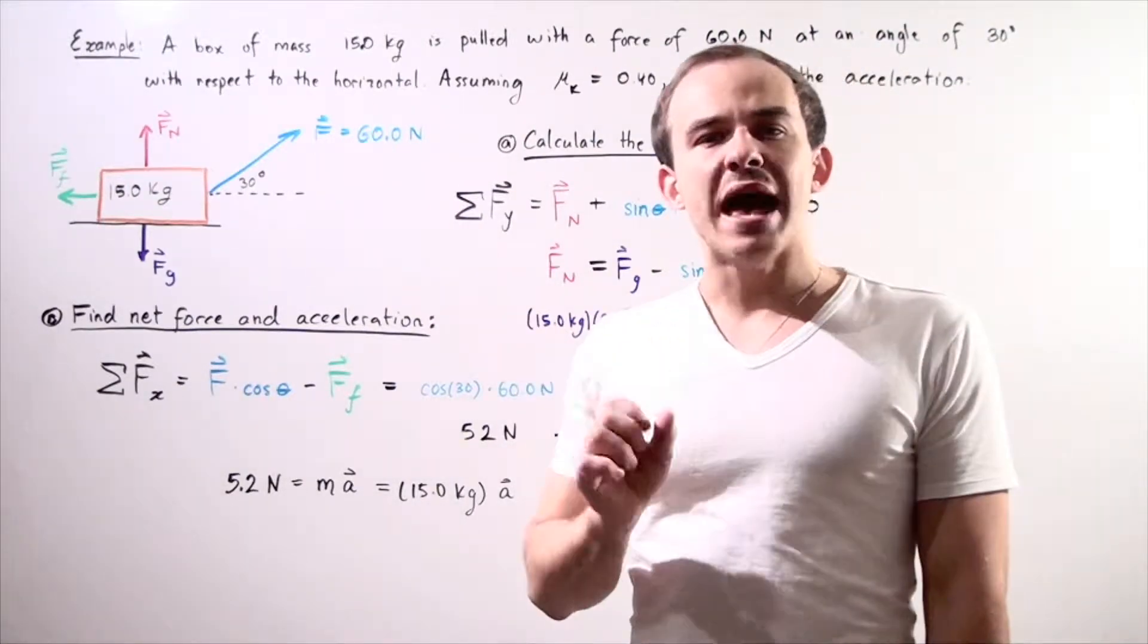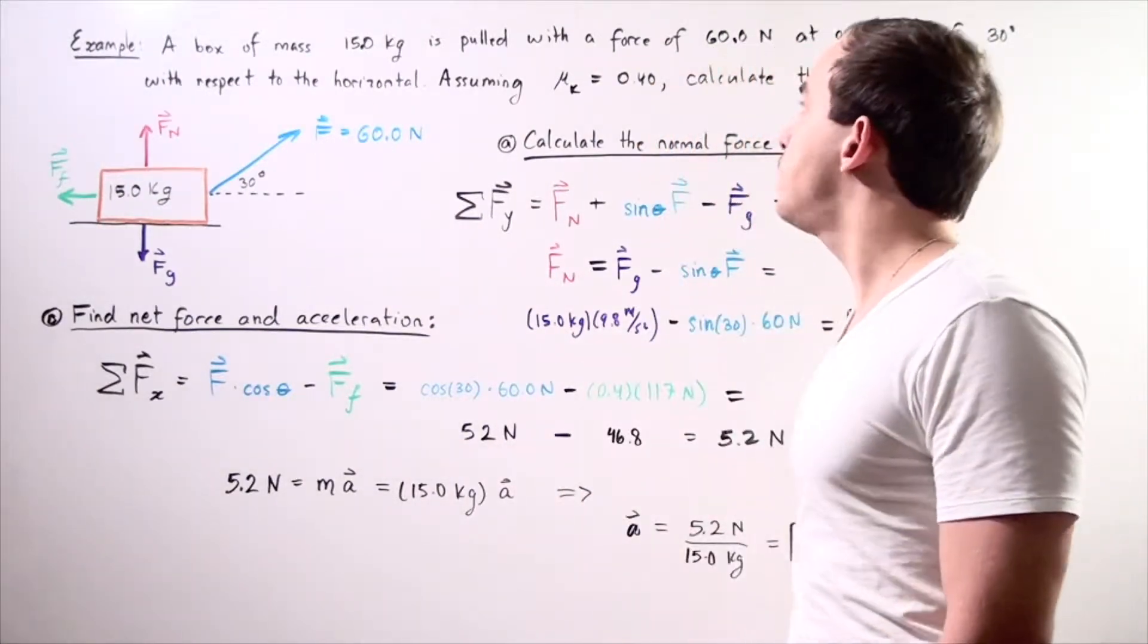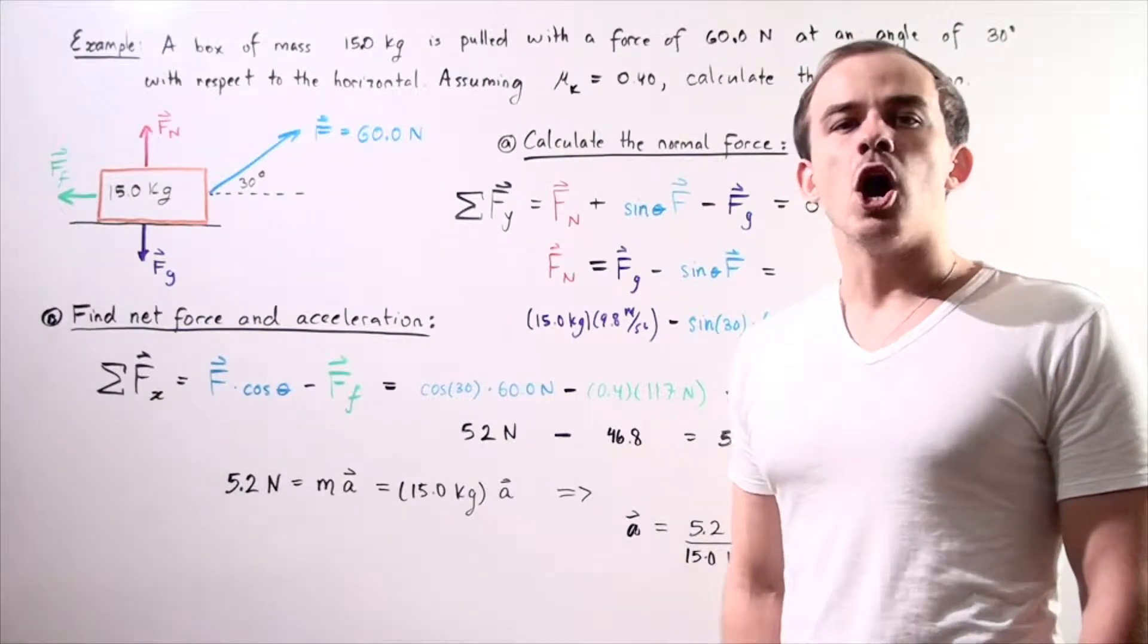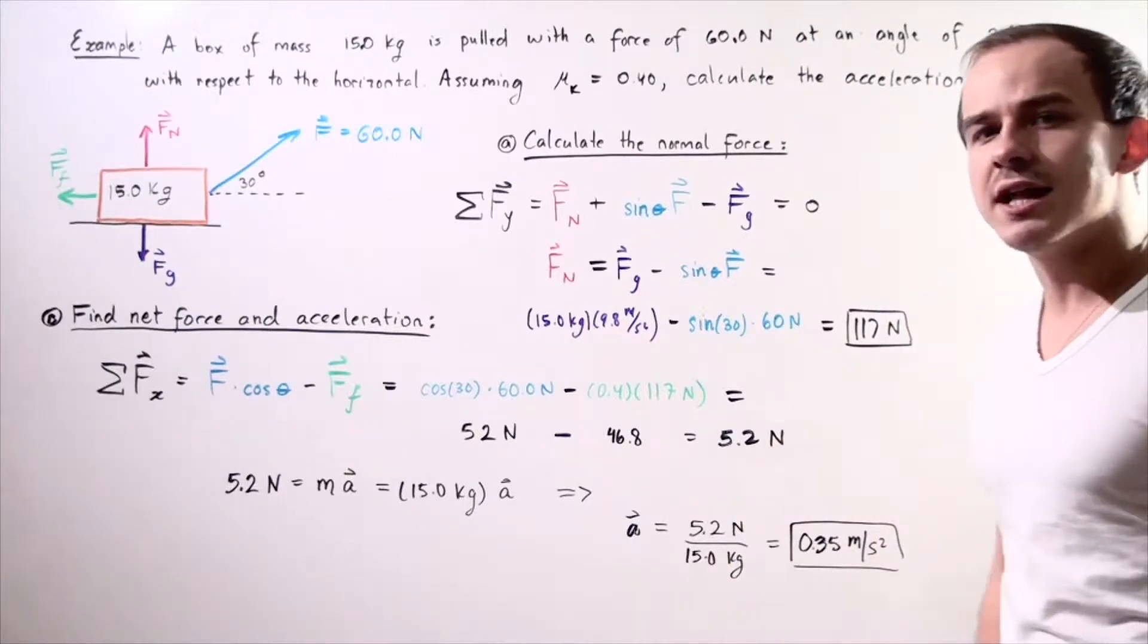Let's suppose that a box of mass 15 kilograms is pulled with a force of 60 newtons at an angle of 30 degrees with respect to the horizontal.